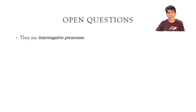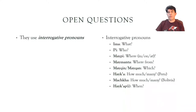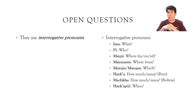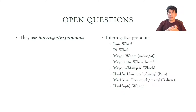Let's take a quick look at open questions before we go into yes-no questions or closed questions. Open questions are performed through interrogative pronouns. You know some of those already, but here is a more comprehensive list. We have 'ima' meaning 'what', 'pi' meaning 'who', 'maipi' meaning 'where', and 'maimanta' meaning 'where from'.